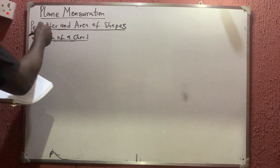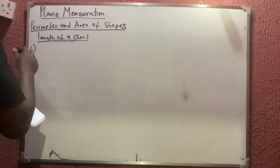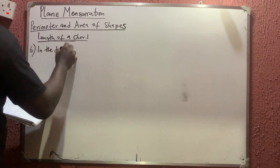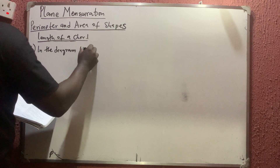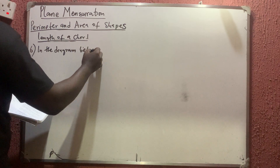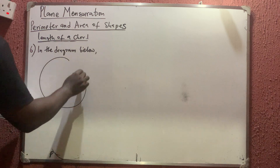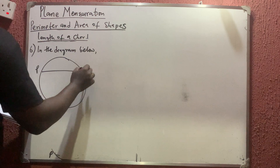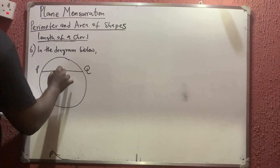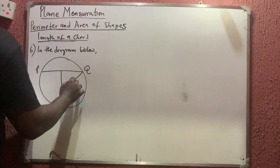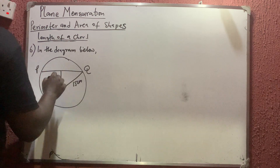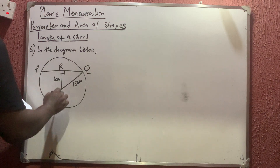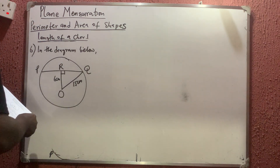We have about nine or ten questions to solve. Question number six: in the diagram below, we have points E and Q, with center O. There is a line to the center, this is 15 cm and this is 6 cm, with a 90-degree angle here. Here is our R and here is our O.